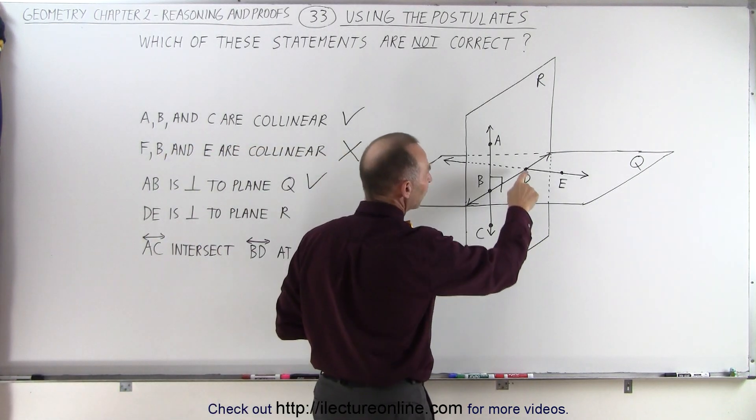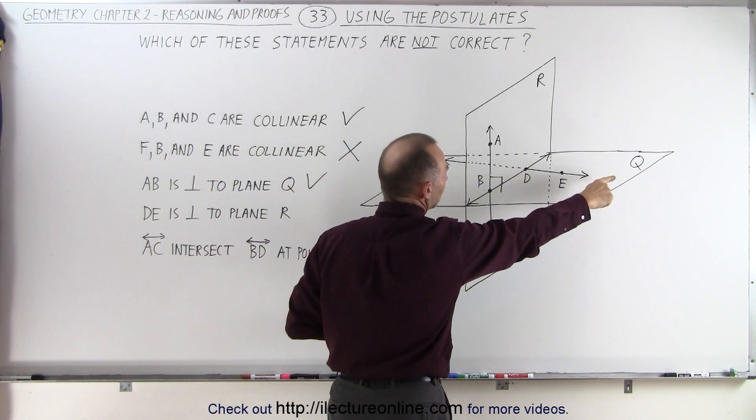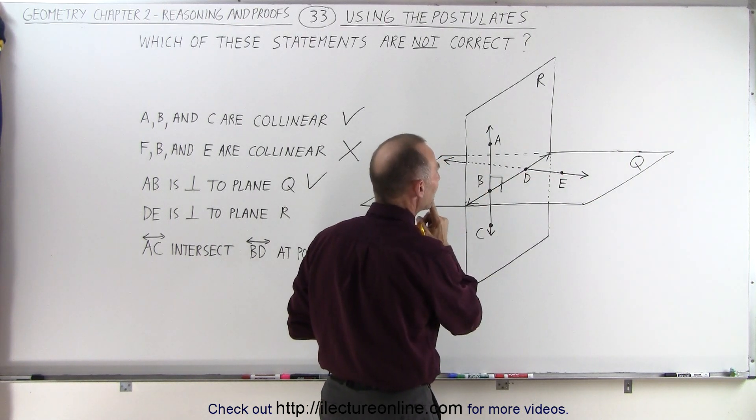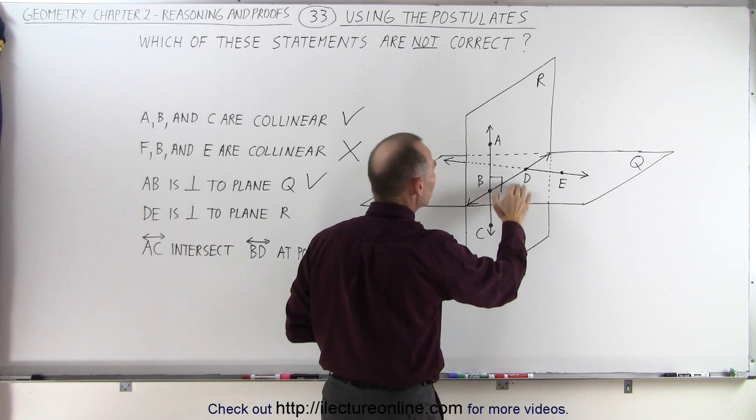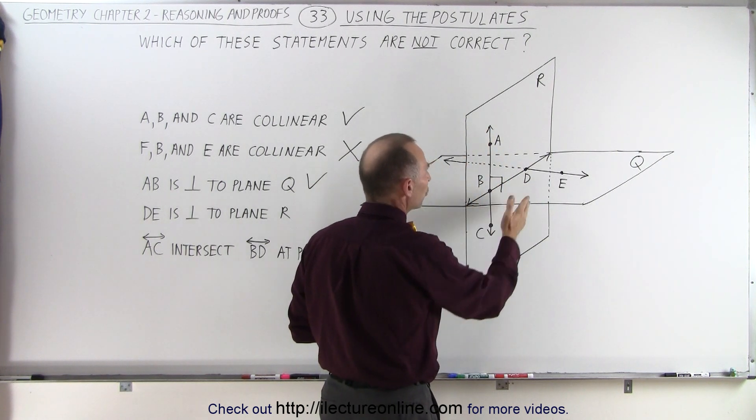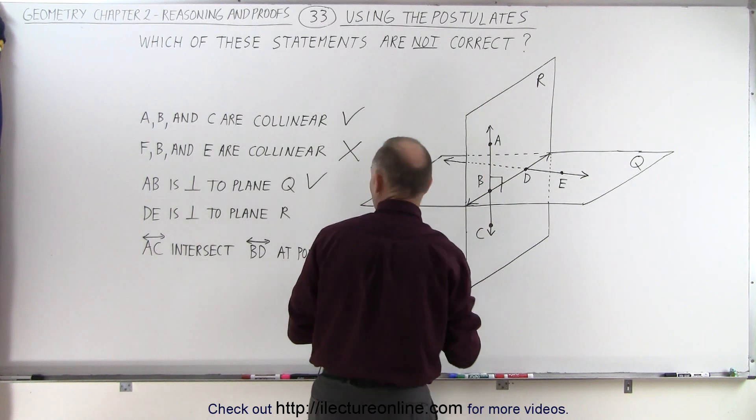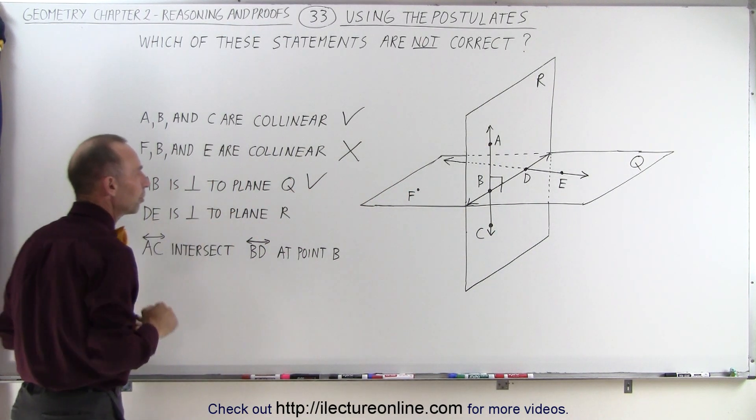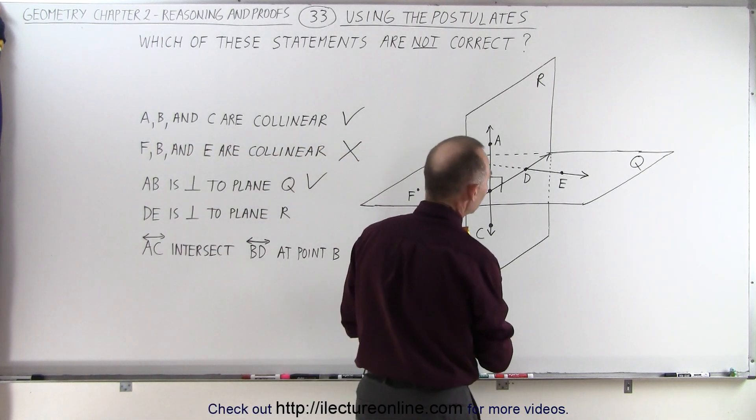The next statement: DE is perpendicular to plane R. So here we have a line that is in plane Q, and we know that plane Q is perpendicular to AB, or to plane R which is perpendicular to AB. So is DE perpendicular to plane R? Well let's see here.